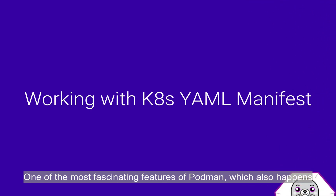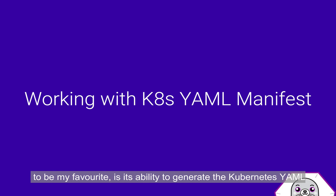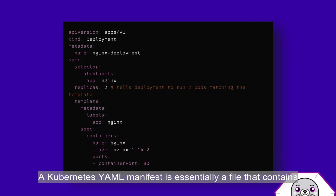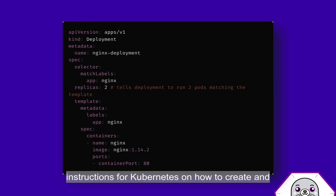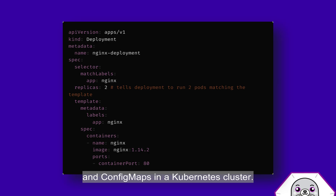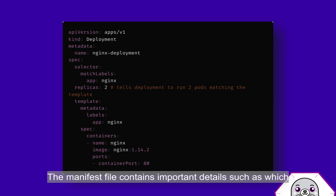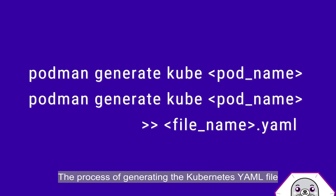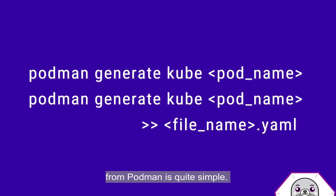One of the most fascinating features of Podman — and also my favorite — is the ability to generate a Kubernetes YAML manifest from Podman pods, which can save developers a lot of time and effort. A Kubernetes YAML manifest is a file that contains instructions for Kubernetes on how to create and manage things such as pods, deployments, services, and config maps in a Kubernetes cluster. The manifest file contains important details such as which container image to use, environmental variables, volumes, and how things are related to each other in the cluster.